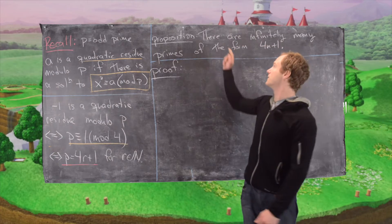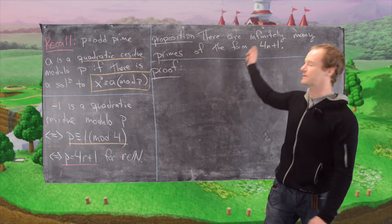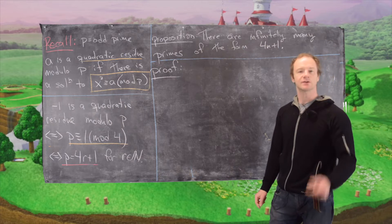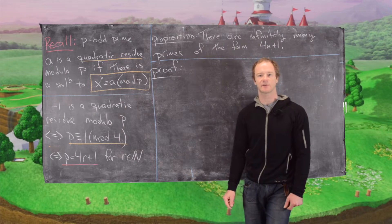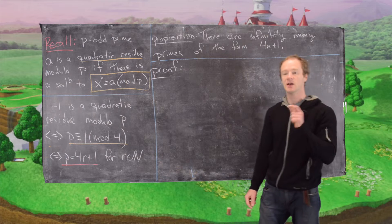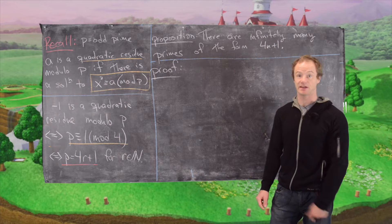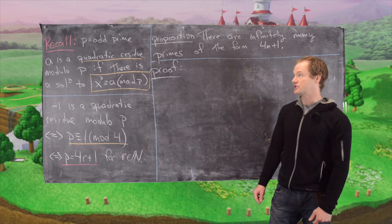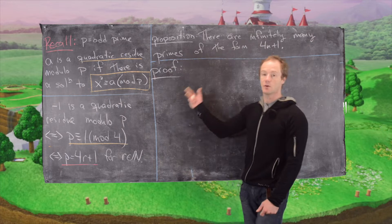Okay, in this video we're going to prove that there are infinitely many primes of the form 4n plus 1. In a previous video we did the same thing for primes of the form 4n plus 3, but this is going to use a slightly different strategy which makes it also an interesting addition.